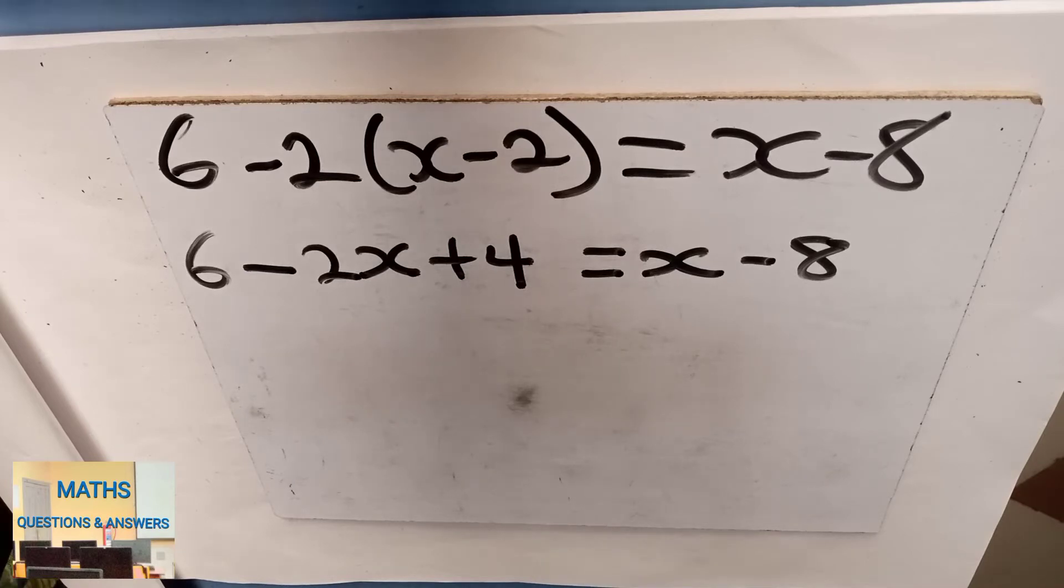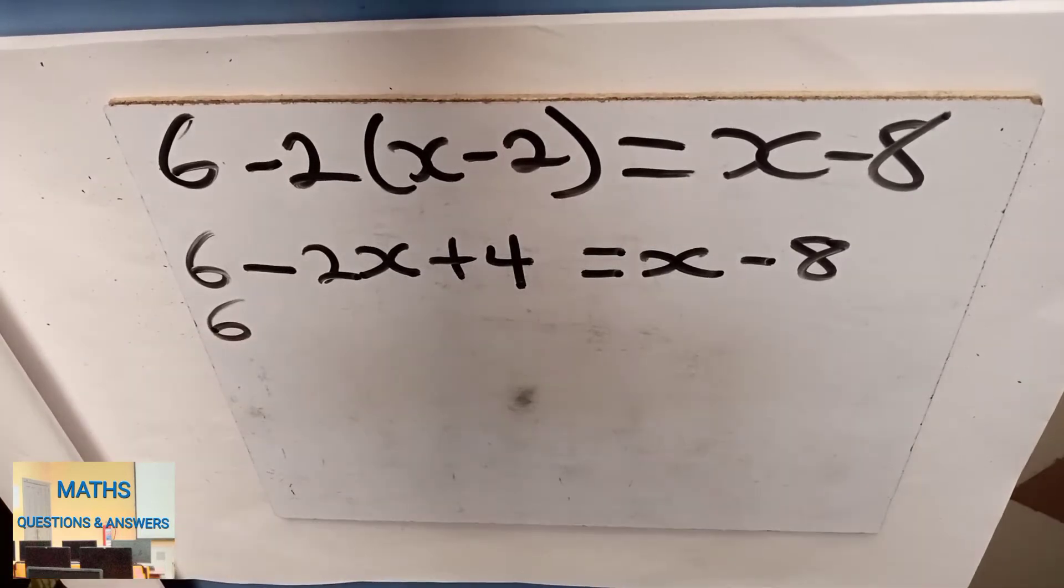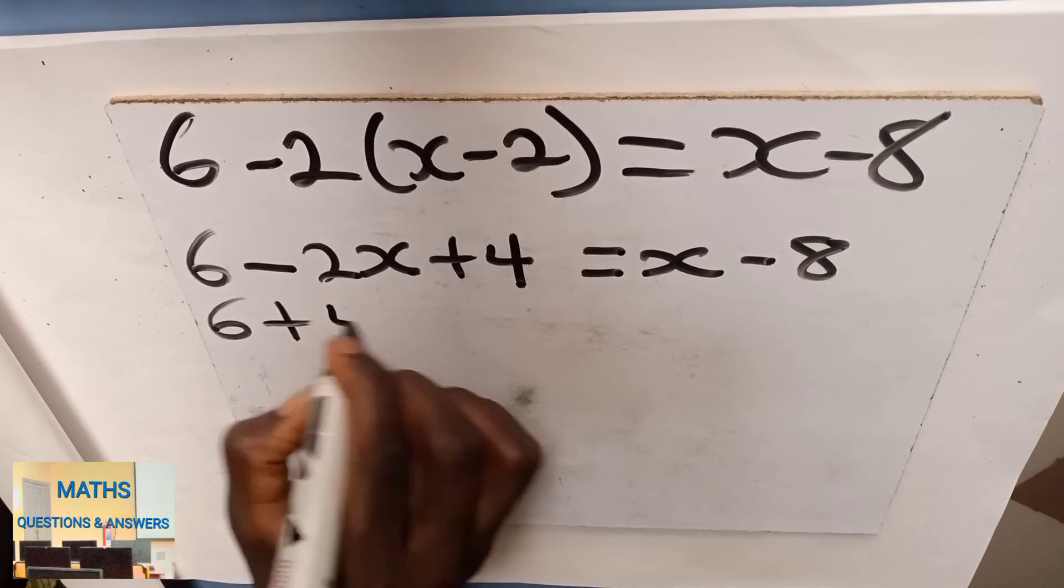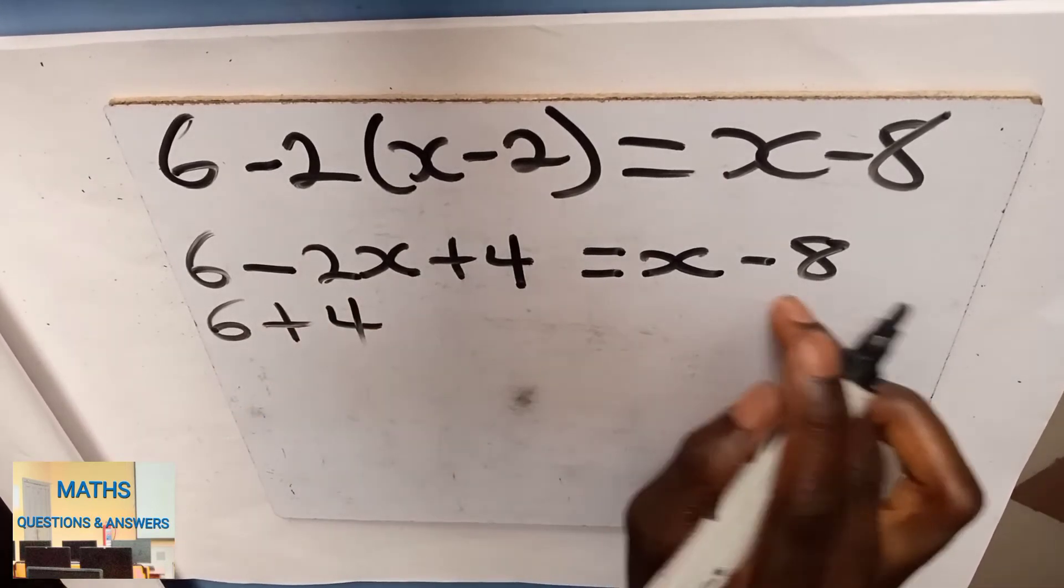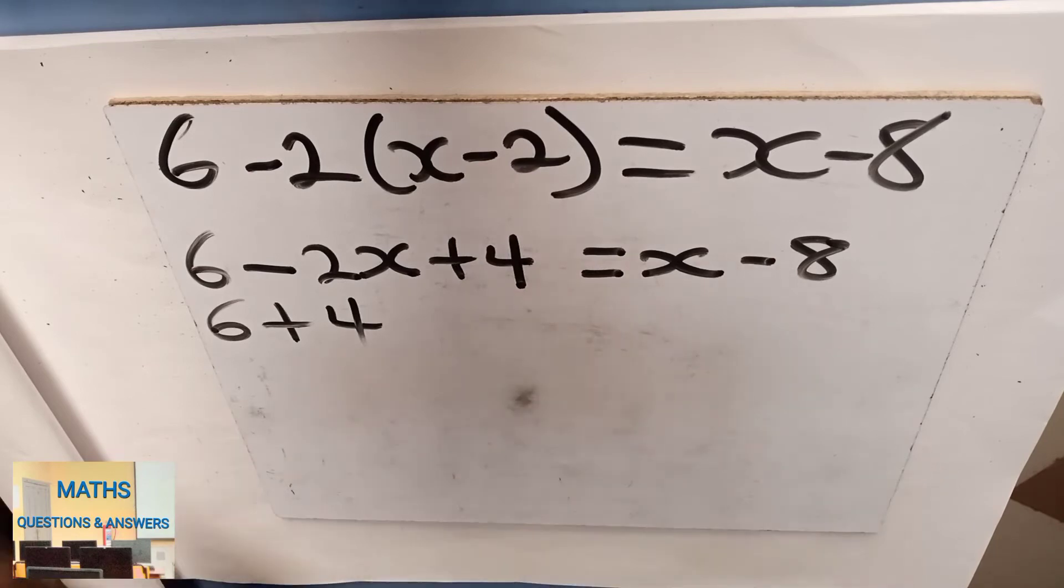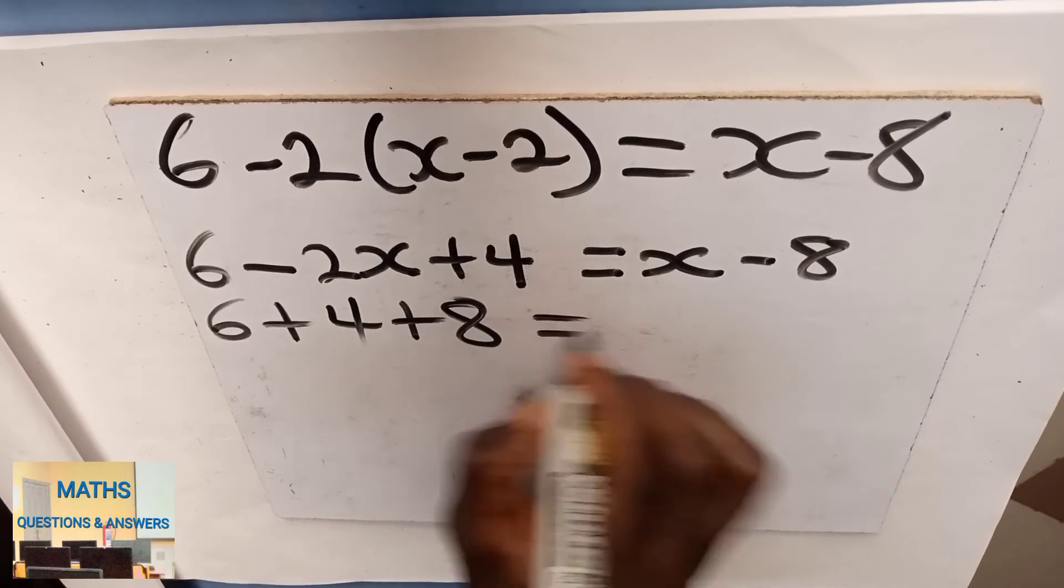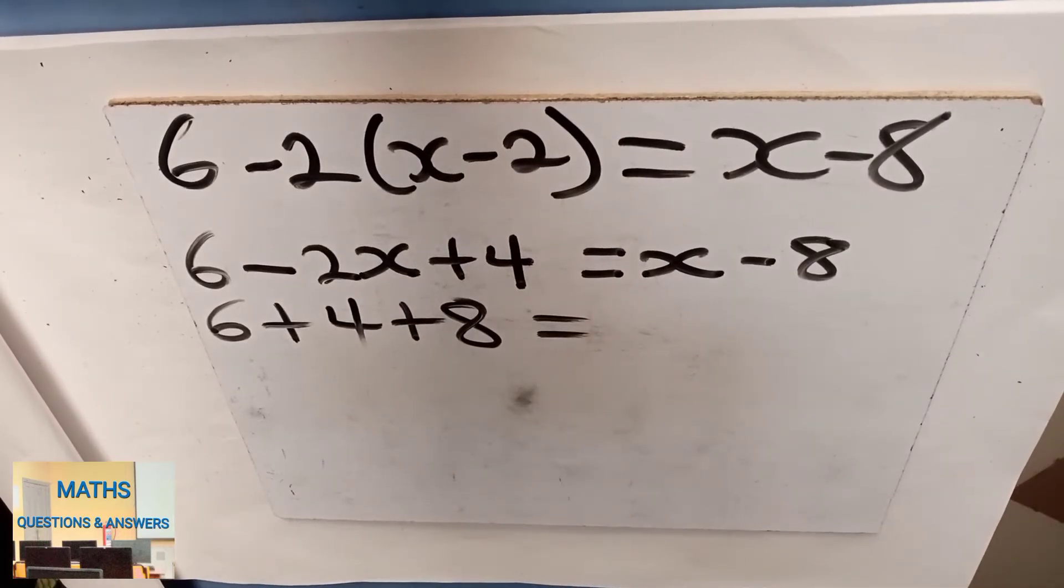So I have my constant number 6, another constant number 4, another constant number negative 8. So I'm bringing this negative 8 to the left-hand side and it will be positive 8. Now the equal sign.